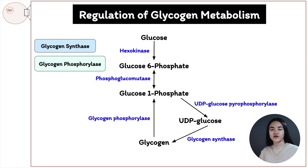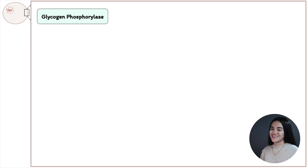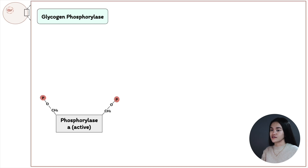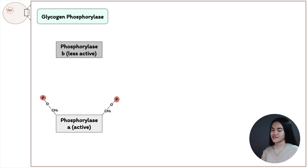Now let's look at glycogen mobilization and how glycogen phosphorylase is regulated. There are two forms: phosphorylase a, which is the active form, and phosphorylase b, which is the less active or inactive form. During rest, glycogen phosphorylase is in its less active form, phosphorylase b.